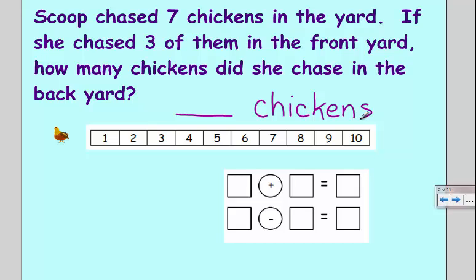I need to figure out how many chickens she chased in the backyard. Well, I'm going to start out by drawing seven, and I'm going to do that in a ten frame. I can draw a ten frame really quickly by drawing a rectangle, cutting it in half, and then making five equal sections.